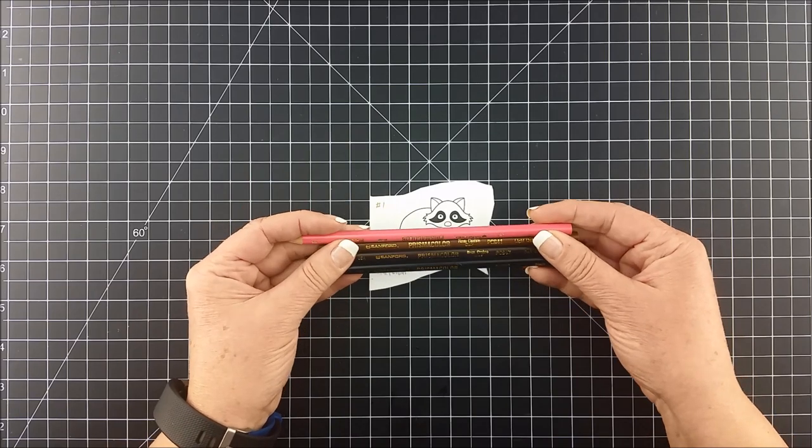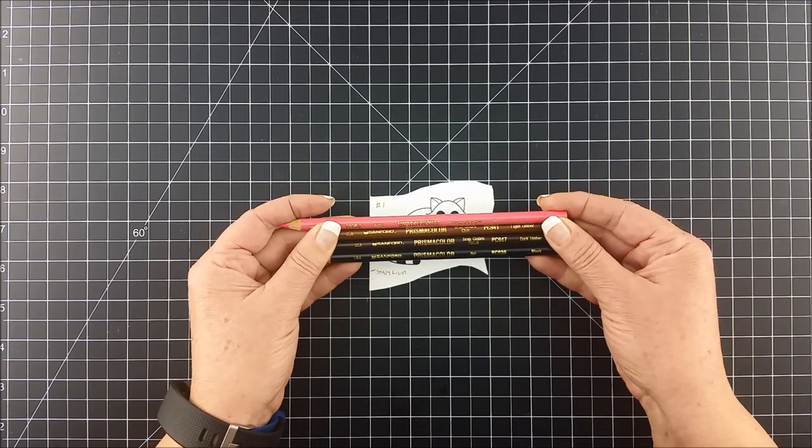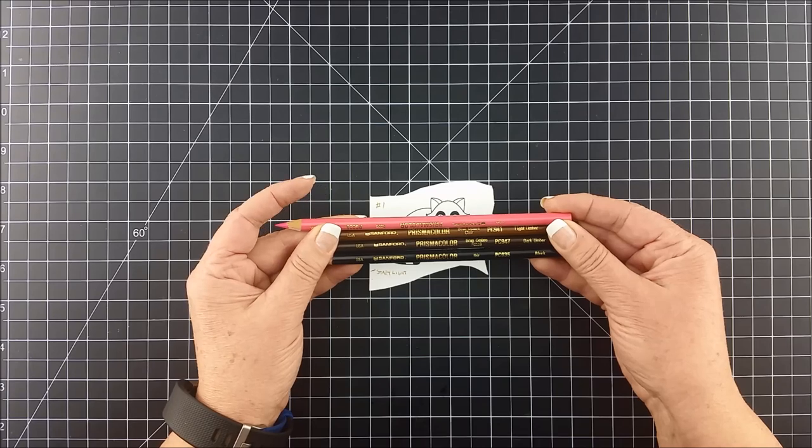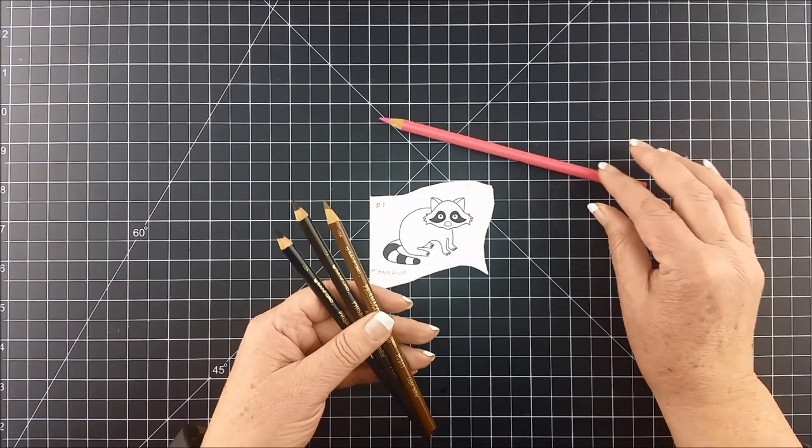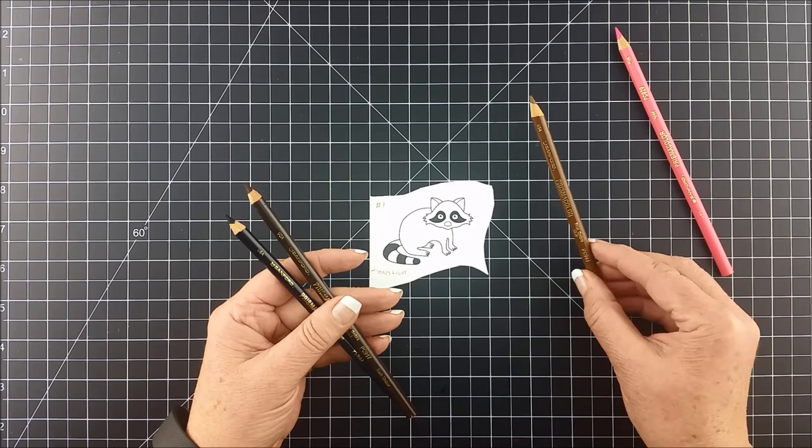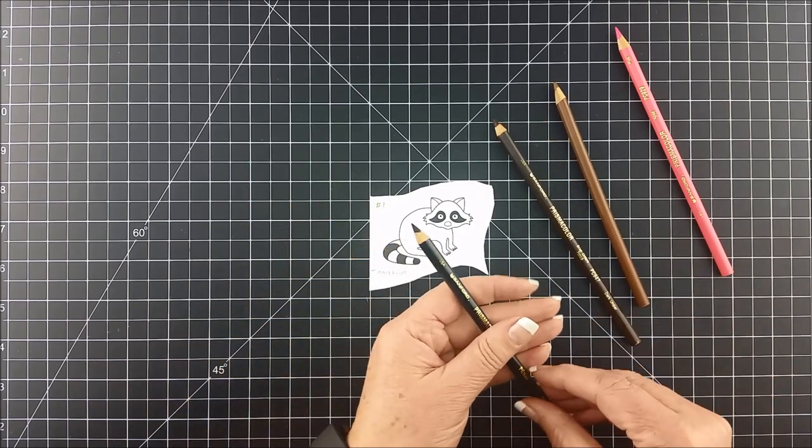Now, the colored pencils I'm using are Prismacolor pencils. I'll have those exact colors up on our blog, but I'm using a pink just a little bit inside of his ears and on his nose, a light brown, a darker brown, and a black.